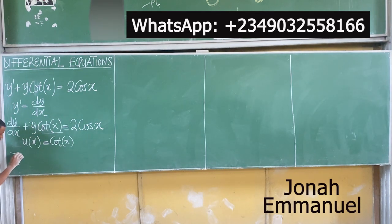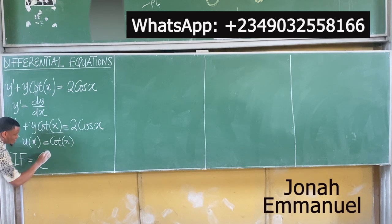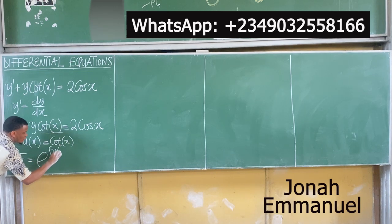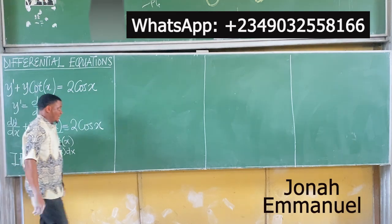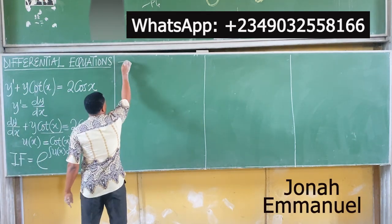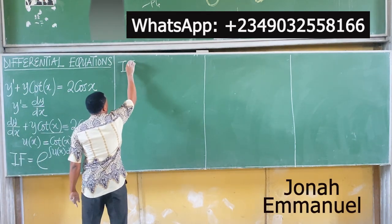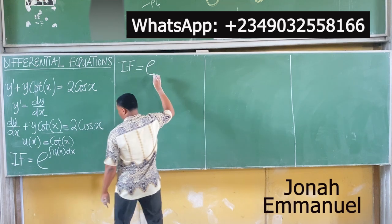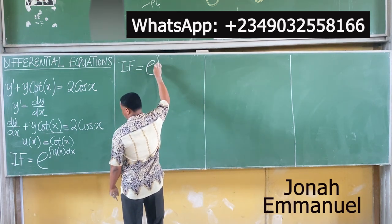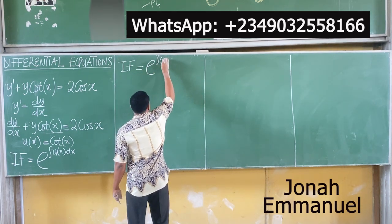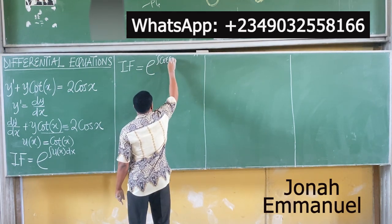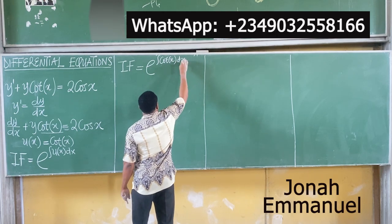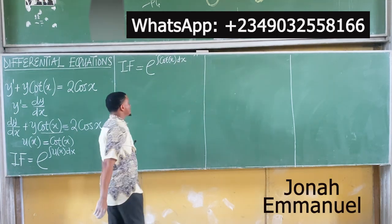The integrating factor is equal to exponential of the integral of u(x) dx. So the integrating factor is equal to e raised to the power of the integral of cos(x) dx.